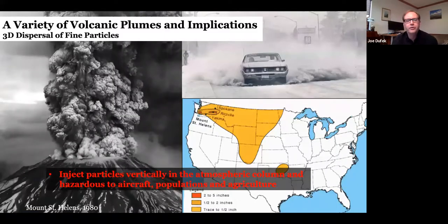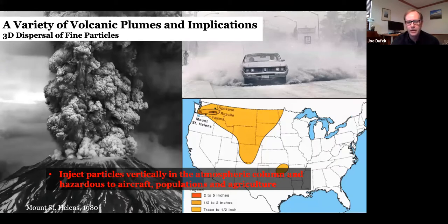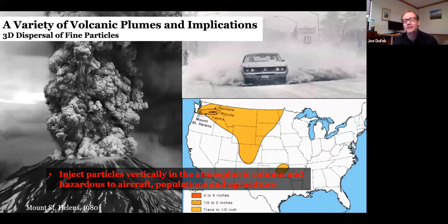Three broad-scale observations to start: volcanic eruption columns are remarkably efficient at transmitting ash and aerosols into the atmosphere, both vertically and horizontally. Even relatively moderate-scale eruptions are very efficient at dispersing ash, as seen in this Mount St. Helens dispersal map. Volcanic ash creates pulmonary hazards in the far field, is hazardous for jet aircraft engines, and aerosols from volcanic eruptions can impact radiative transfer and have climate modification effects.